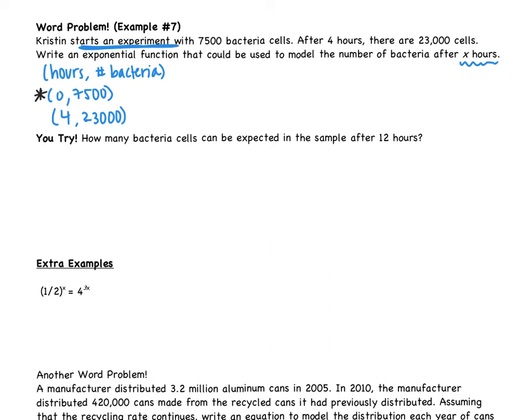So again, always start with the ordered pair that has a zero in it. So we have our y = a·b^x. We're going to start with the ordered pair that has a zero. So 7,500 goes in for y. We talked about anything to the zero power is 1. So my a is 7,500. This gives me now y = 7,500·b^x.